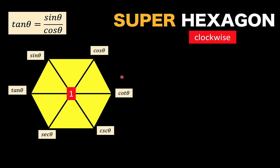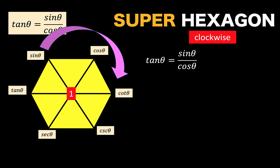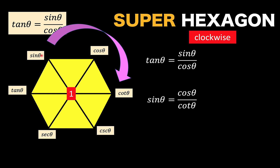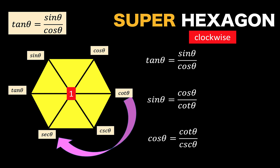Now let's use this super hexagon to generate trigonometric identities. The first set is generated by rotating clockwise. For example, with tangent, sine, and cosine: rotating clockwise gives the basic identity tangent theta equals sine theta over cosine theta. Continuing to rotate, sine theta equals cosine theta over cotangent theta, and cosine theta equals cotangent theta over cosecant theta.